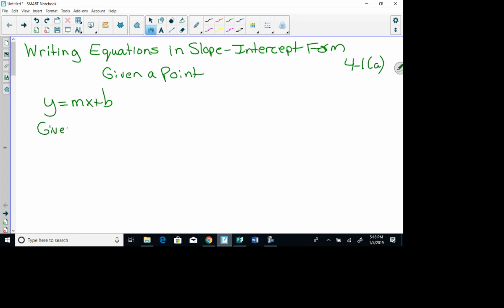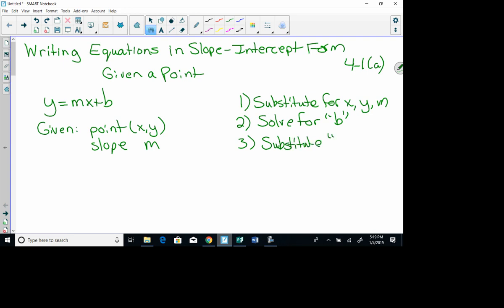So we are going to be given a point, and a point is always in the form of x, y, and we're also going to be given the slope, and remember the slope is m. So we are going to have some steps to follow. The first step is that we are going to substitute for x, y, and m. The second step is that we are going to solve for b. And the third step is that we are going to then substitute again b and m into the slope-intercept equation.